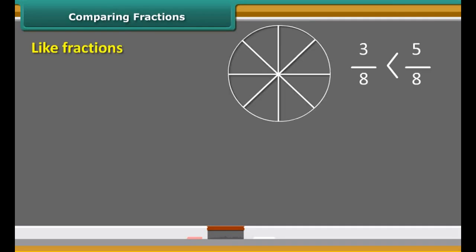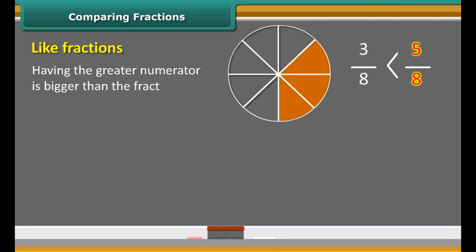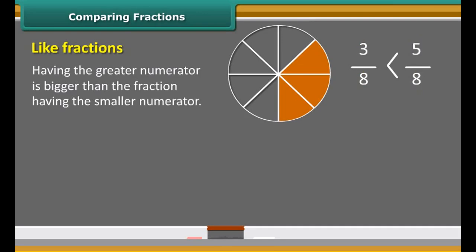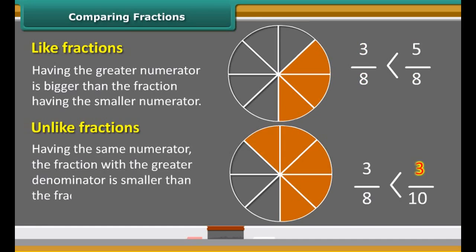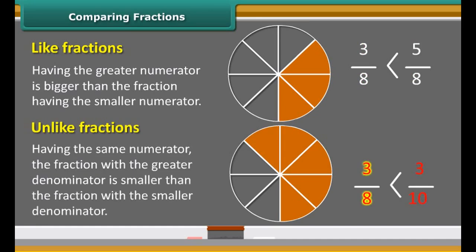In like fractions, the fraction having the greater numerator is bigger than the fraction having the smaller numerator. In case of unlike fractions having the same numerator, the fraction with the greater denominator is smaller than the fraction with the smaller denominator.